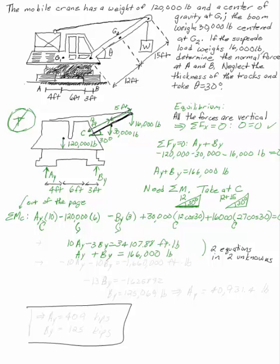So if I, for example, multiplied this bottom one by negative 10, I would have negative 10 AY minus 10 BY is minus 1,660,000 foot-pounds now. So I can add this equation and this equation. The AYs will cancel. And I get minus 13 BY is minus 1,625,892, and BY is 125,069 pounds. I can substitute that back in. AY is 40,931.4 pounds. Answer the question to three sig figs. AY is 40.9 kips. Remember, a kip is a kilopound. And BY is 125 kips.